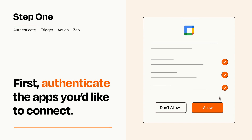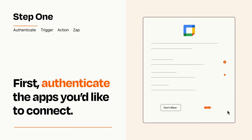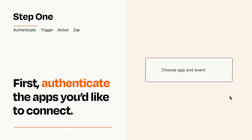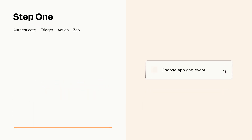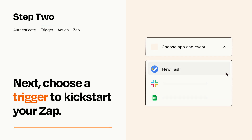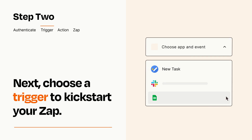Zapier meets industry standards for encryption when connecting with each of your apps. Now let's set up your trigger, which is the event that starts your Zap. Pick the trigger event that you want from the list.